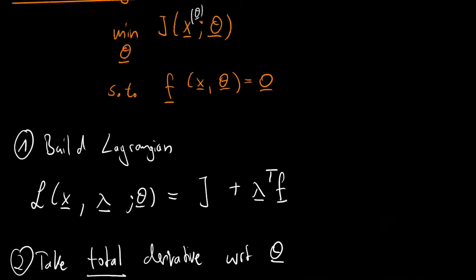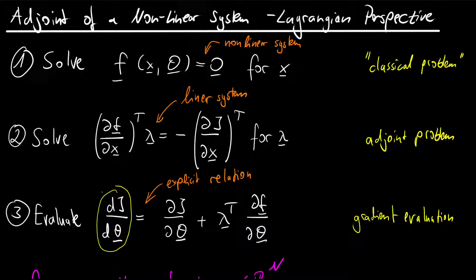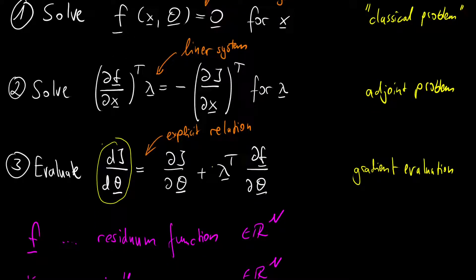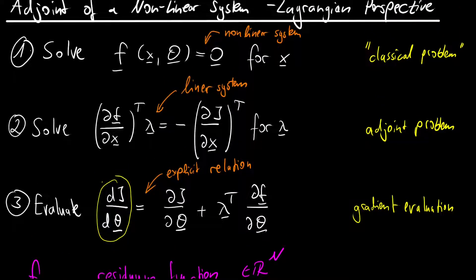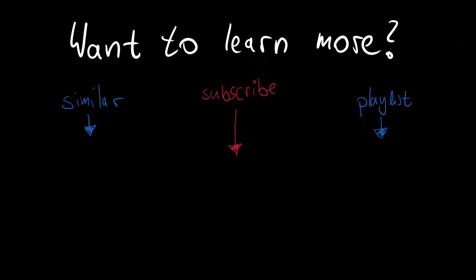So going back to the full picture: first we solve the classical problem, then the adjoint problem we just derived, and finally the gradient evaluation — which compared to the other two is almost a no-operation. The computational cost lies in steps one and two, and with these we are orders of magnitude faster than finite differences or forward sensitivities for large parameterized systems. Check out the next video for a Python implementation on a non-linear mechanics problem, and please leave a like and subscribe if you enjoyed it.